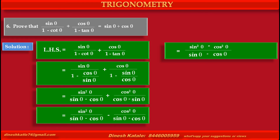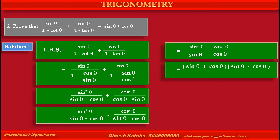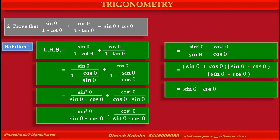The combined numerator becomes sin squared theta plus cos squared theta, which can be factorized as sin theta plus cos theta into sin theta minus cos theta, upon the denominator sin theta minus cos theta. Cancelling the common factor sin theta minus cos theta from numerator and denominator, we get sin theta plus cos theta, which is the required right hand side.